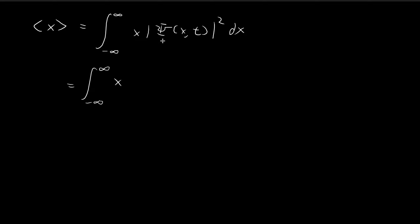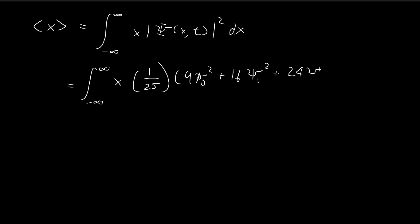In the last video, we found that the square of the modulus of the wave function is equal to this expression. So we're just going to apply this directly. You can immediately notice that we can do some preliminary simplifications: x multiplied by ξ₀ squared is just going to be equal to 0.